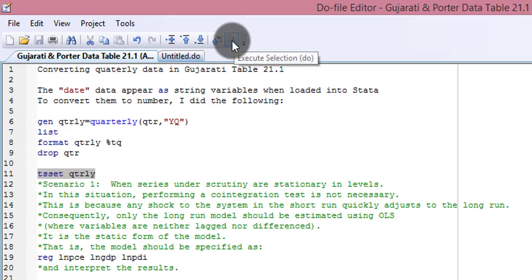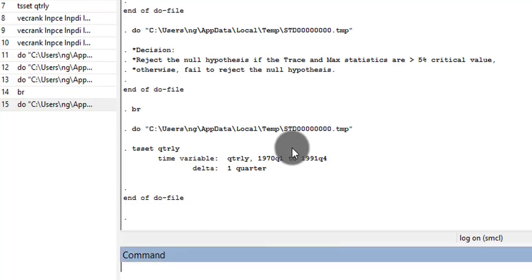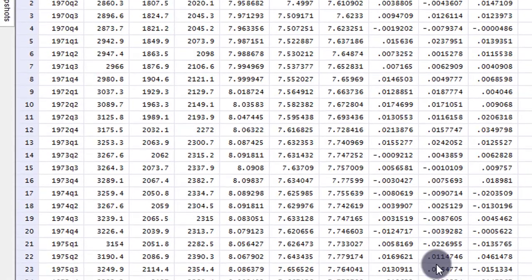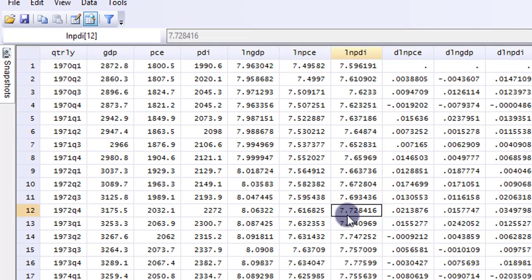And I have this output from Stata telling me that I have a time variable from 1970 quarter 1 to 1991 quarter 4. If I type browse here, it shows you all the variables I have in my browser editor.